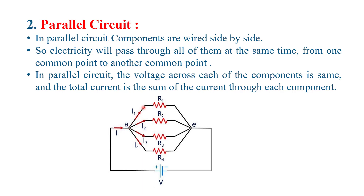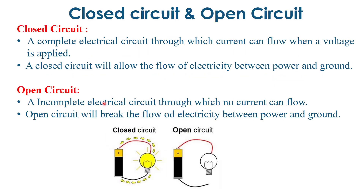The voltage is the same in a parallel circuit, but the current is different through each component. In R1, current I1 flows; in R2, current I2 flows; in R3, current I3 flows; and in R4, current I4 flows. The total current is the sum of I1 + I2 + I3 + I4.